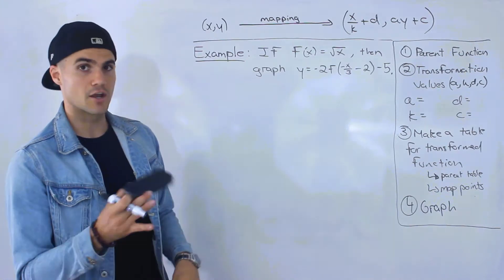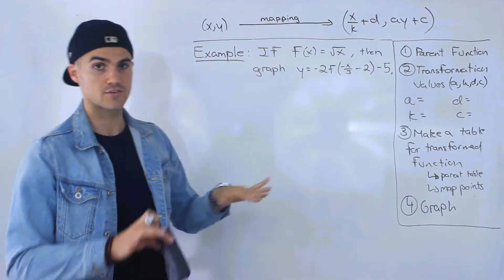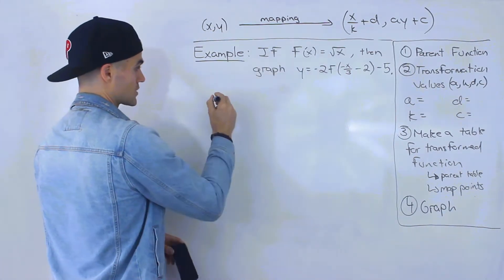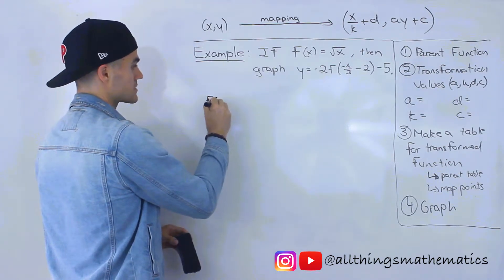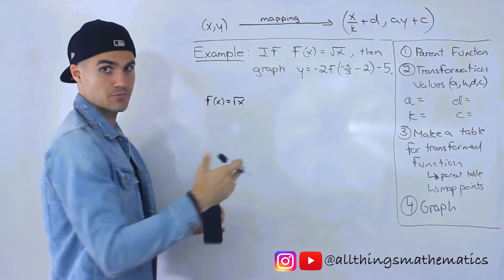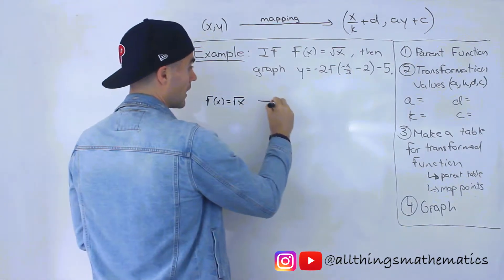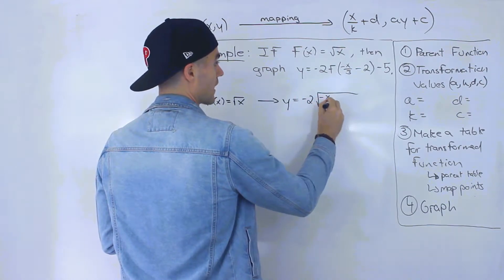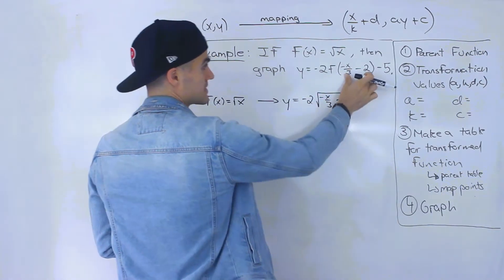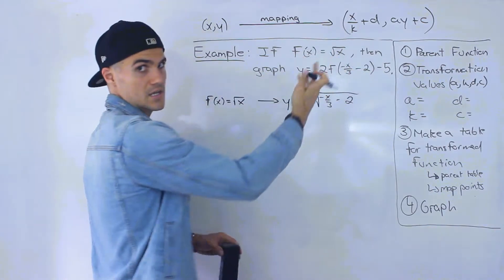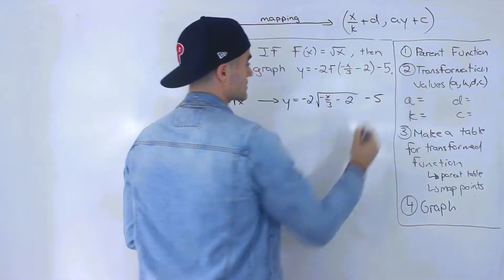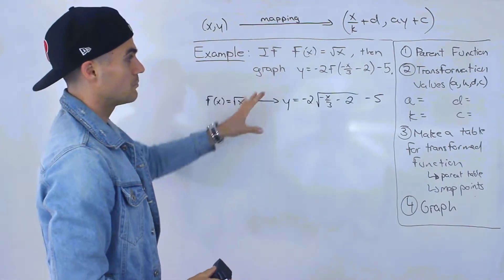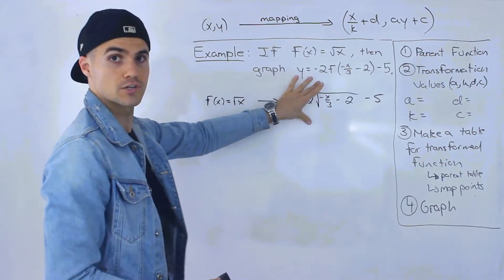Notice this is another example where the parent function and the transformations are separated. But we could have also asked this question where the parent function, the square root of x, and those transformations were combined. If they were combined, it would look like this: negative 2 times the square root of negative x over 3 minus 2, and then minus 5 on the outside.